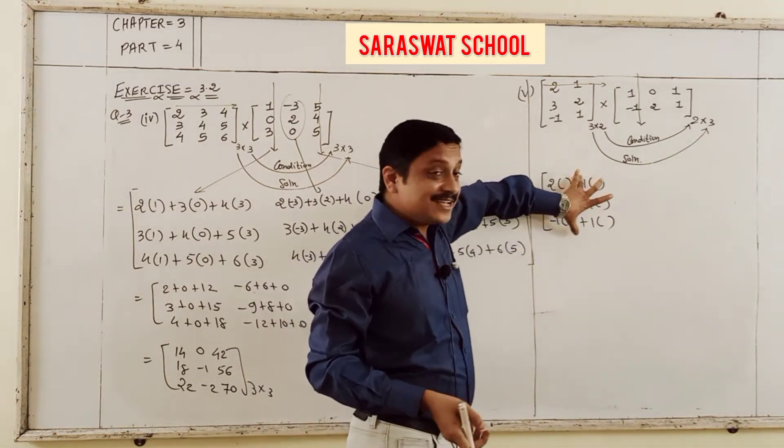Also verify that A plus (B minus C) is equal to (A plus B) minus C. Where A is given as: 1, 5, 1; 2, 0, minus 1; minus 3, 2, 1. B matrix is also given as: 3, 4, 2; minus 1, 2, 0; and 2, 5, 3.